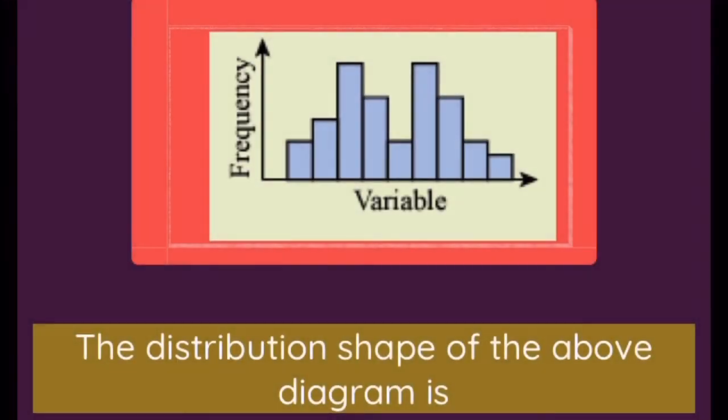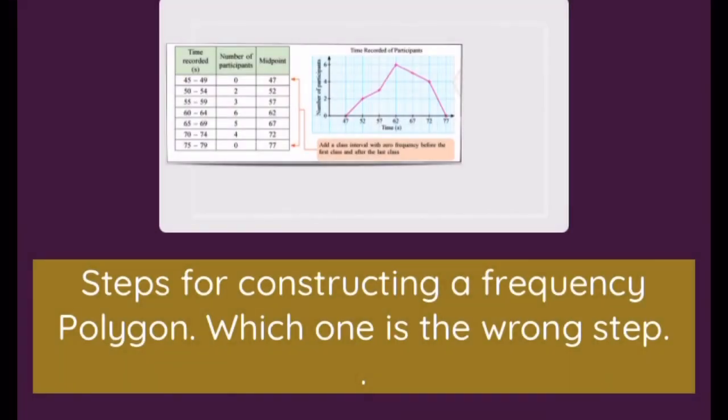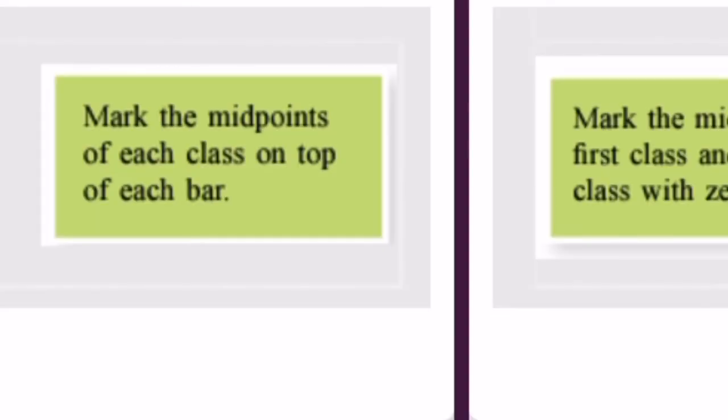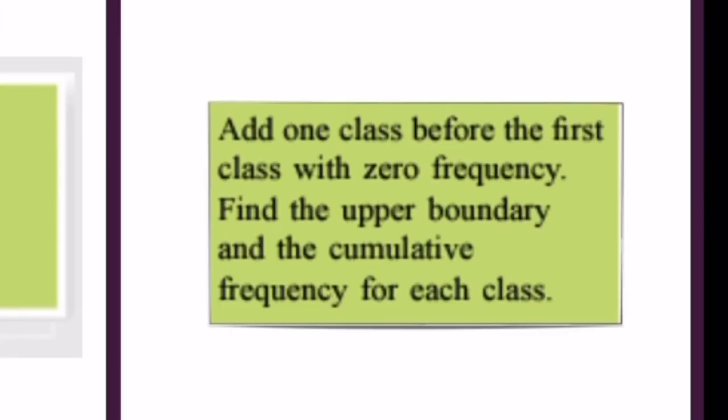The distribution shape of the above diagram is... Question: For constructing a frequency polygon, which one is the wrong step? Option 1 is an image, Option 2 is an image, Option 3 is an image, Option 4 is an image.